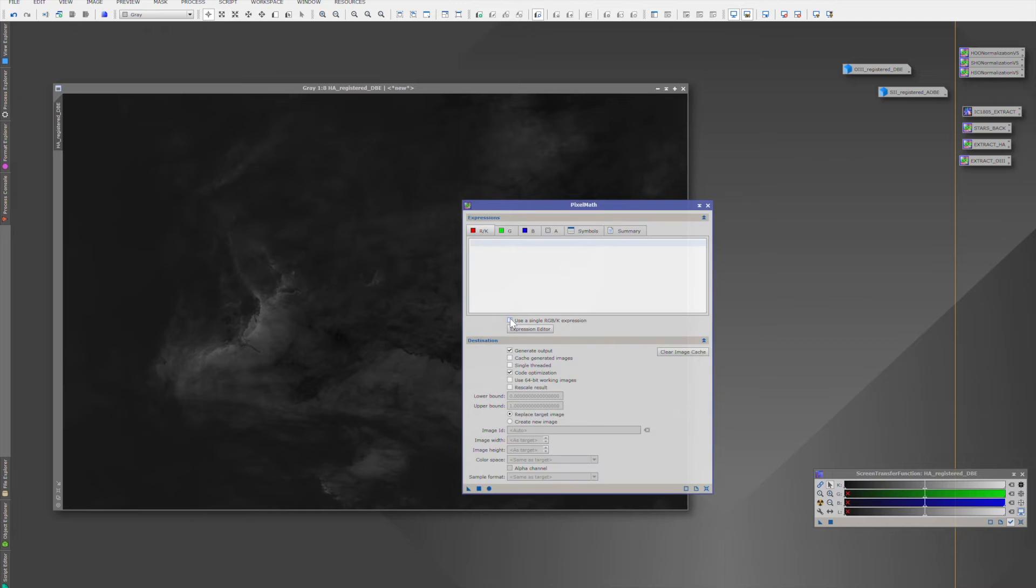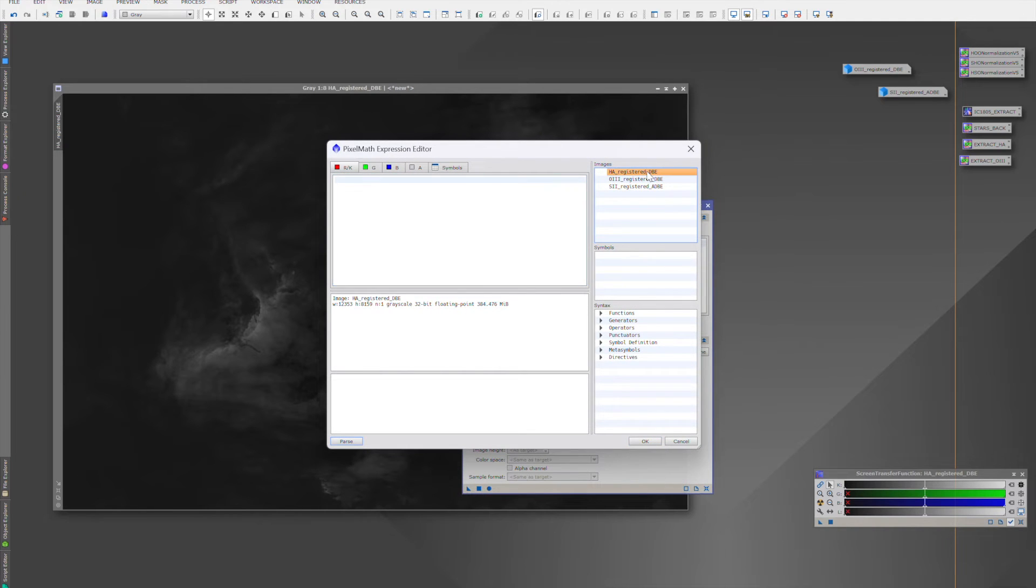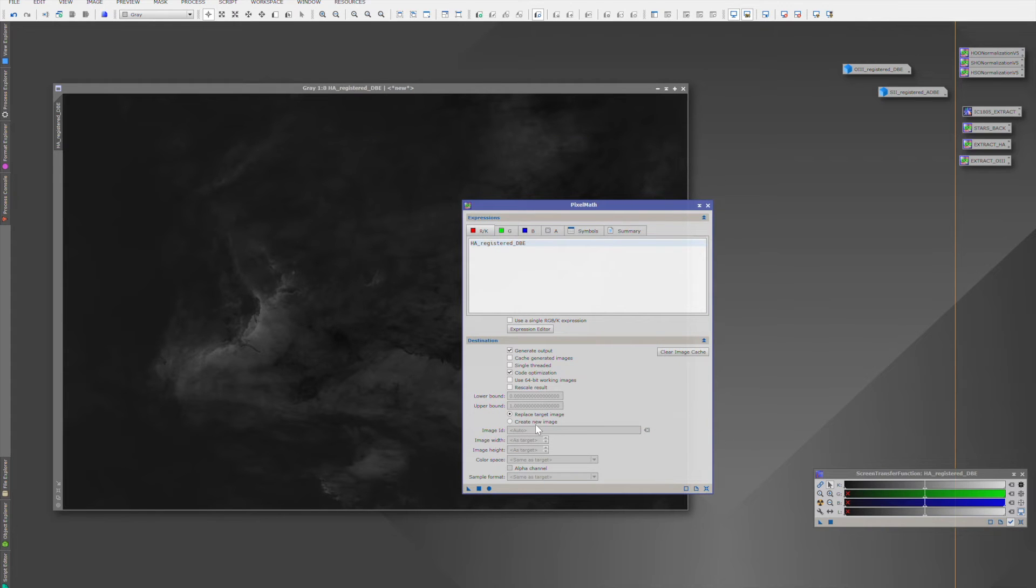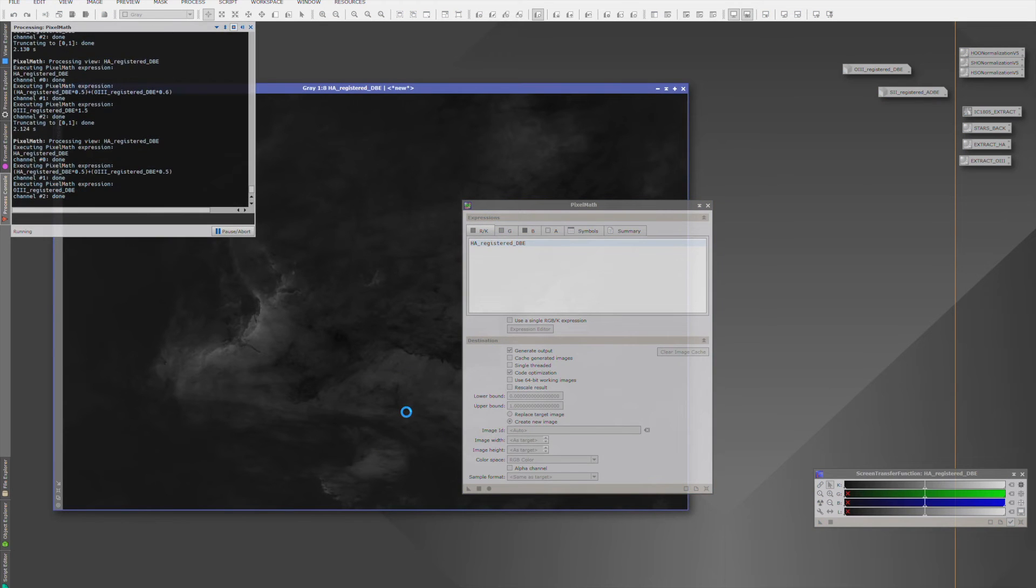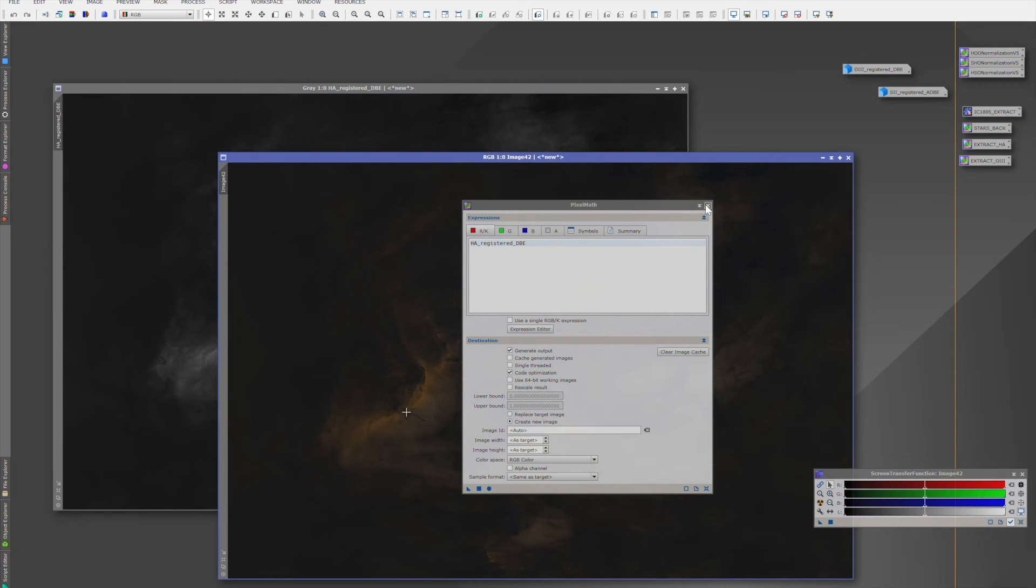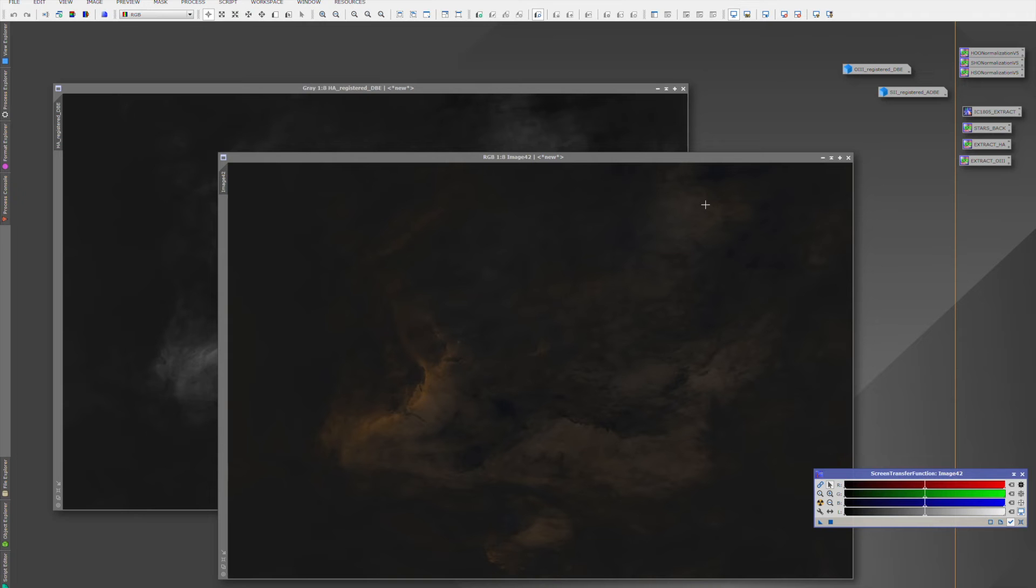Post-processing is another area where these two types of imaging differ. With one-shot color, the workflow is generally simpler and faster. With mono, you'll need to combine the separate exposures, which can be more complex but also offers more control over the final image, as you can combine the different exposures in different ways to achieve the color palette of your choice. You also have the ability to add natural RGB stars to your narrowband nebula, or hydrogen alpha data to your galaxies, and a whole bunch of different combinations in between.